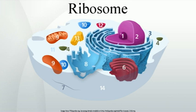Ribosomes from bacteria, archaea, and eukaryotes — the three domains of life on Earth — differ in their size, sequence, structure, and the ratio of protein to RNA. The differences in structure allow some antibiotics to kill bacteria by inhibiting their ribosomes, while leaving human ribosomes unaffected.